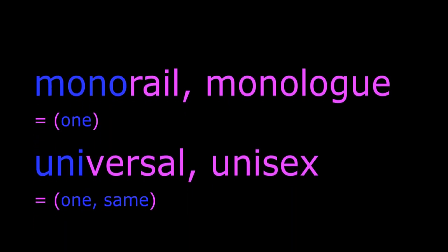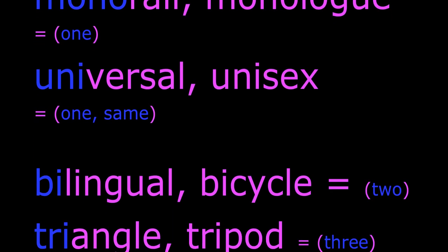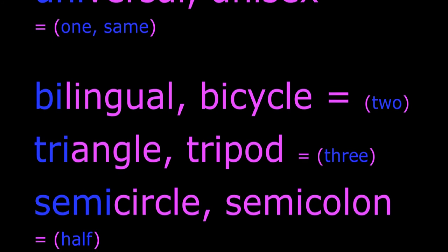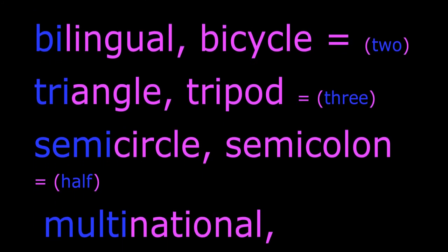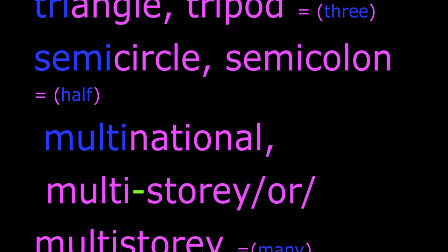Mono, uni, bi, tri, multi, semi — these indicate a number, frequency, or shape. Monorail and monologue mean one. Universal and unisex mean one or same. Bilingual and bicycle mean two. Triangle and tripod mean three. Semicircle and semicolon mean half. Multinational, multi-story.